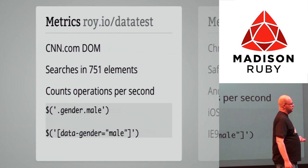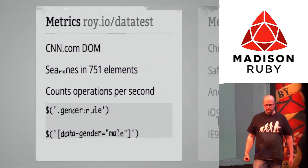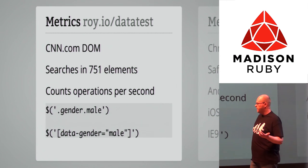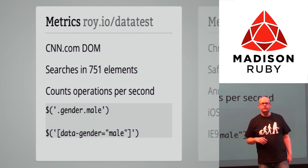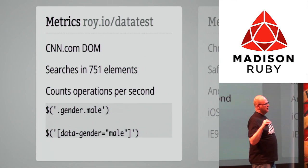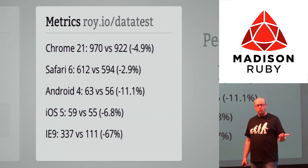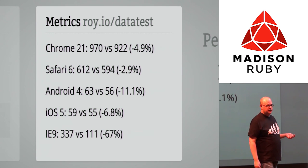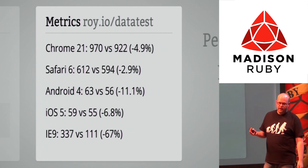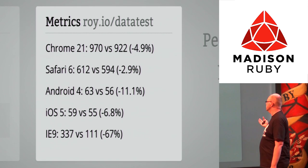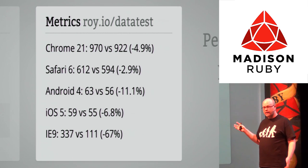I counted operations per second for two jQuery queries on that HTML. The first uses class names — a combination of 'gender' and 'male' — to find elements. The second uses a data attribute. Chrome does 970 operations per second using class names and 922 using data attributes — a 4.9% difference. On Android it's 2.9%, on iOS 6.8%. That's an acceptable trade-off to me.